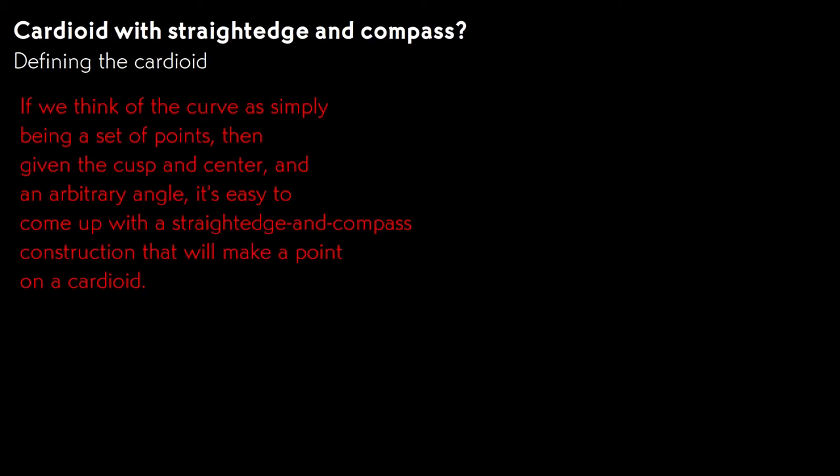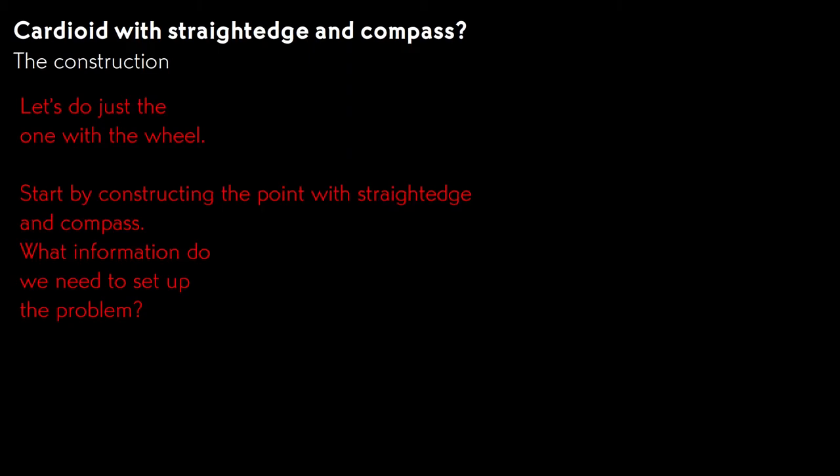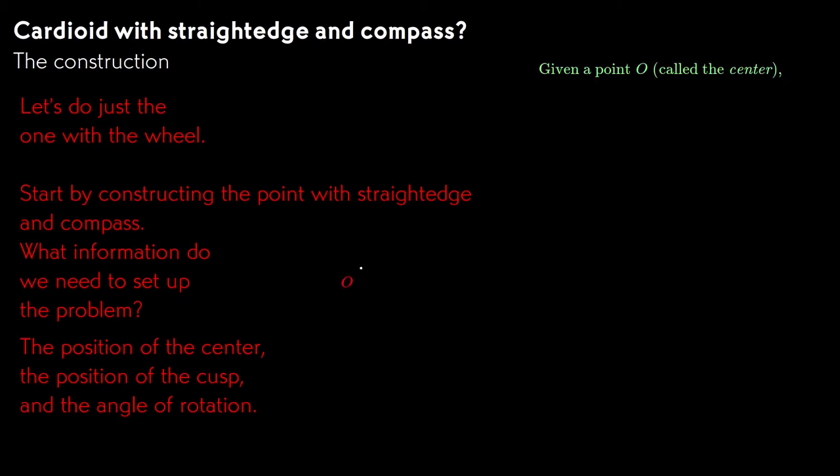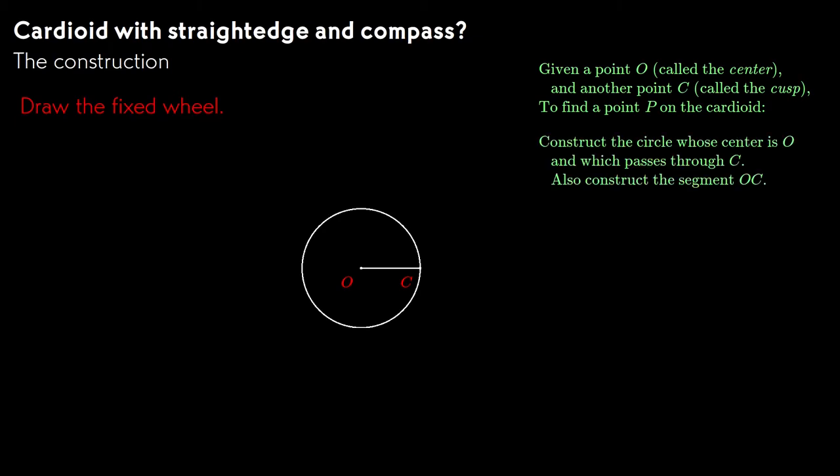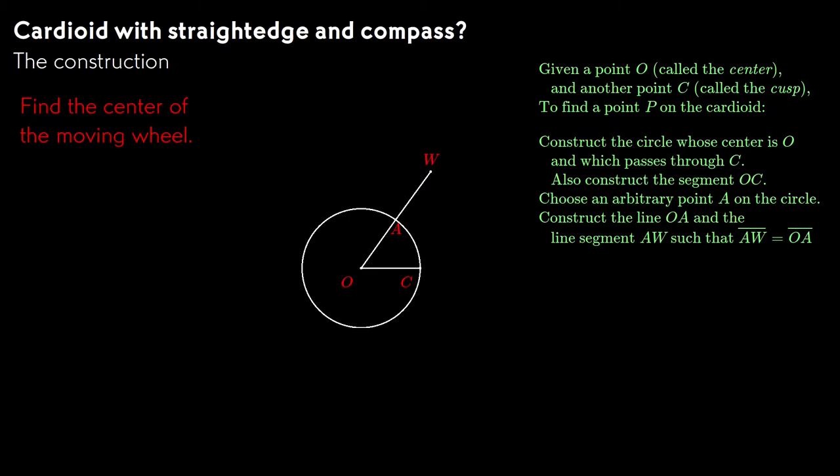This gives us two straightedge and compass constructions that will start with an arbitrary angle and construct a point on the cardioid. Let's do the one that starts with a point on the wheel. How do we set up the problem? We need to give the location to the center, the location to the cusp, and an angle of rotation, or equivalently, a point of contact between the wheels. If you like, we'll build a formal statement of the problem on the right. So we choose the center and choose the cusp. We draw the fixed wheel with the compass. We draw the radius from center to cusp. We choose the point of contact. We use our straightedge to draw the radius through the point of contact and extend the line out one more radius using the compass to measure it.